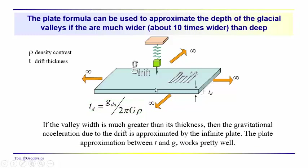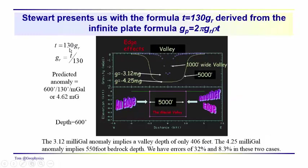There's about 5–6% error with that ratio. The formula Stewart comes up with is that the drift thickness equals the gravity anomaly over the drift divided by 2π G ρ, and he does this in a units-consistent way — mixing units to give thicknesses in feet where the anomaly is in milligal. So 2π G ρ gets units manipulated so that the output thicknesses are in feet, giving his formula T = 130 G, where G here is the residual anomaly and ρ is the density contrast times the drift thickness.